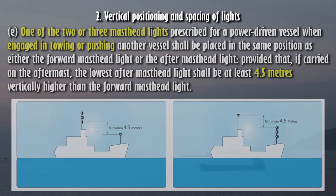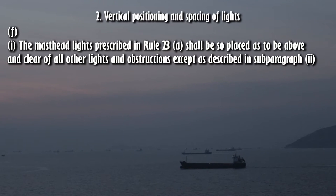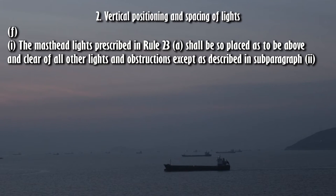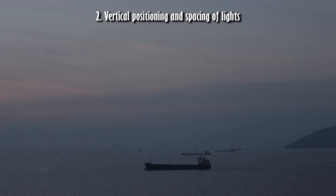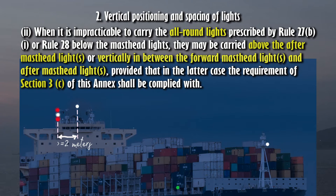(F) The masthead lights prescribed in Rule 23 shall be so placed as to be above and clear of all other lights and obstructions, except as described in the relevant subparagraph. When it is impracticable to carry the all-round lights prescribed by Rule 27 or Rule 28 below the masthead lights, they may be carried above the after masthead lights or vertically in between the forward masthead lights and after masthead lights, provided that in the latter case the requirement of Section 3 of this Annex shall be complied with.